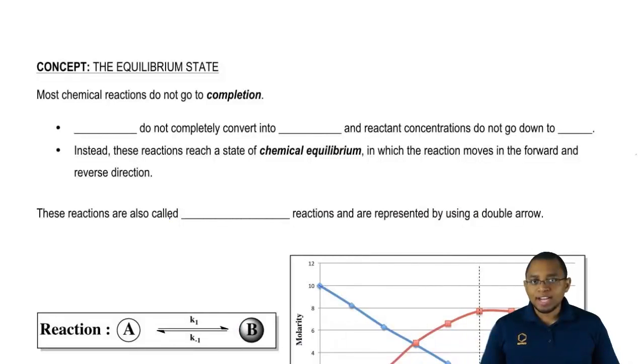First we're going to say that most chemical reactions never go to completion. When we say the word completion, all that really means is that our reactants do not completely convert into products.